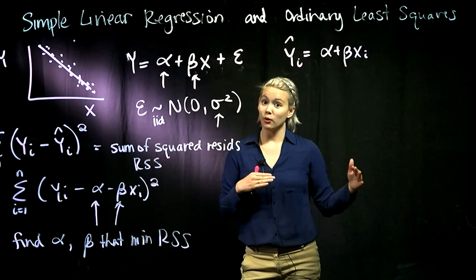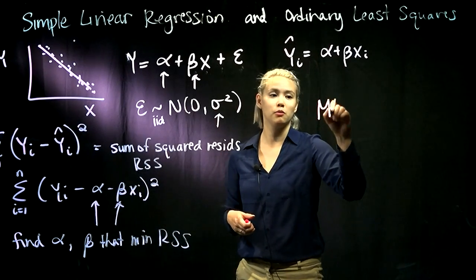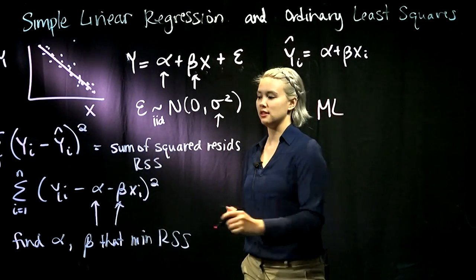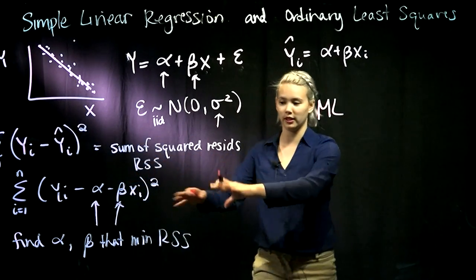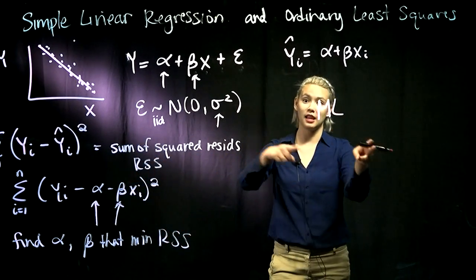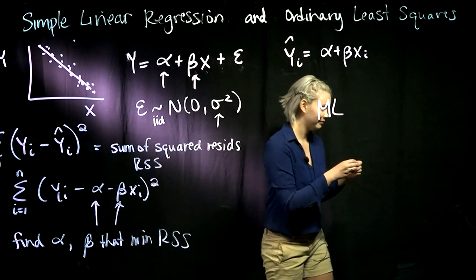The next thing we're going to be talking about is tying this back to maximum likelihood. We'll see that the estimates we get through this method of ordinary least squares are going to be the same as those we get through maximum likelihood.